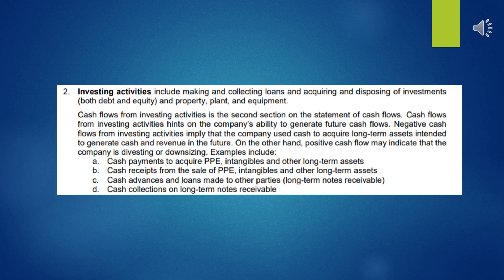Next are investing activities. This includes making and collecting loans and acquiring and disposing of investments — both debt and equity — and property, plant, and equipment. Cash flows from investing activities is the second section of the statement of cash flows, after operating activities. It hints on the company's ability to generate future cash flows. Negative cash flows from investing activities imply that the company used cash to acquire long-term assets intended to generate cash and revenue in the future.